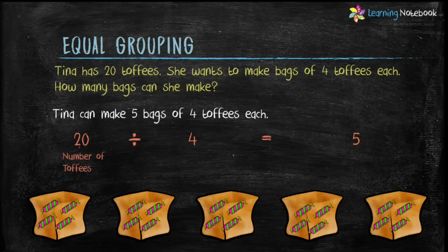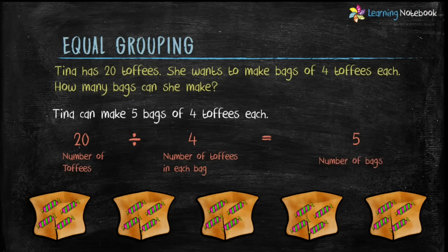Where 20 is the total number of toffees Tina has, 4 is the number of toffees she puts in each bag, and 5 is the number of bags she made. Students, this is called equal grouping.